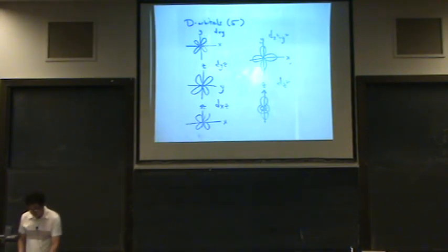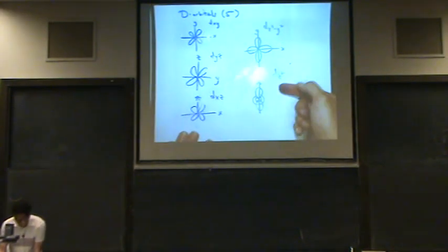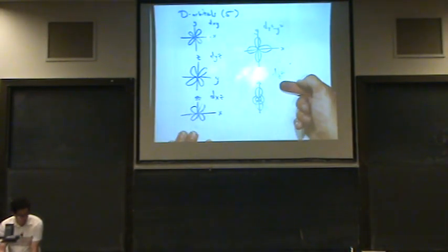So what does that mean? Since the ligands are coming in on the x and the z-axis, any orbital on the x or z-axis will be at the highest possible energy. So the dz-squared is on the z-axis, so that will be a high energy.